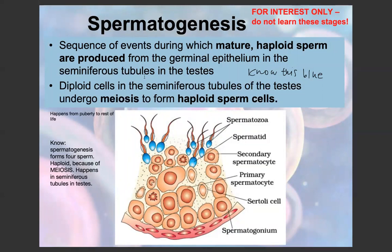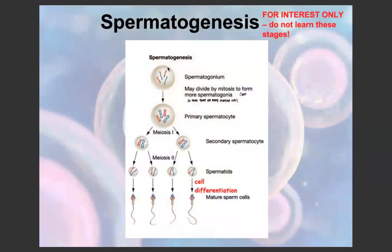Spermatogenesis is the sequence of events during which mature haploid sperm — N as opposed to 2N — are produced from the germinal epithelium in the seminiferous tubules in the testes. The diploid cells in the seminiferous tubules undergo meiosis to form haploid cells, going from 46 to 23 chromosomes. The important things to know are that spermatogenesis forms four sperm, that it's haploid because meiosis occurs, and that it occurs in the seminiferous tubules. You start with one spermatogonium and end with four sperm cells.